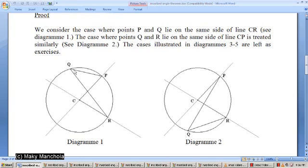This is where points P and Q are on the same side of line CR. There is another case which is very similar to it, and it is treated the same way basically. The case that you see here in this other diagram, Diagram 2.